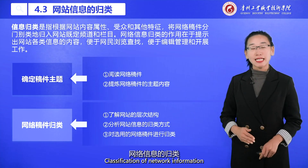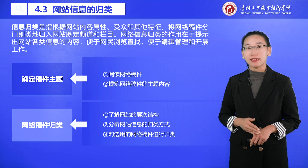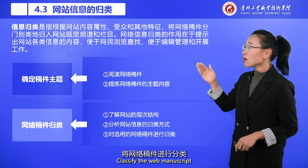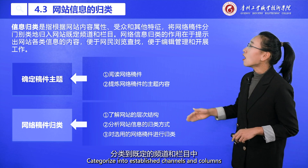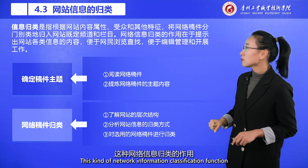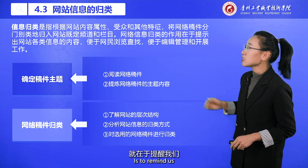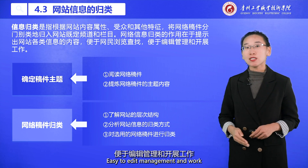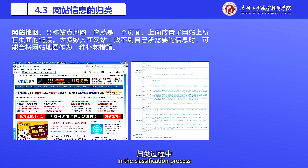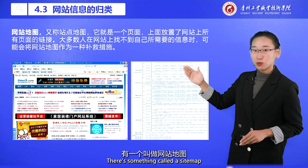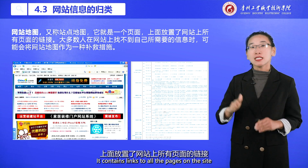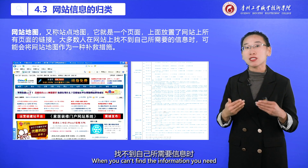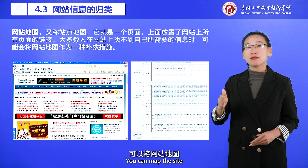Let's look at the classification of network information. Information categorization refers to classifying web content according to the attributes of the website's content, its audience, and other characteristics, categorizing manuscripts into established channels and columns. The function of network information classification is to organize various types of information on the website so that internet users can browse and find content easily, and to make editing and management easier. In the classification process, there is something called a sitemap — it is a page that contains links to all the pages on the site. Most people use the sitemap as a remedial measure when they cannot find the information they need.